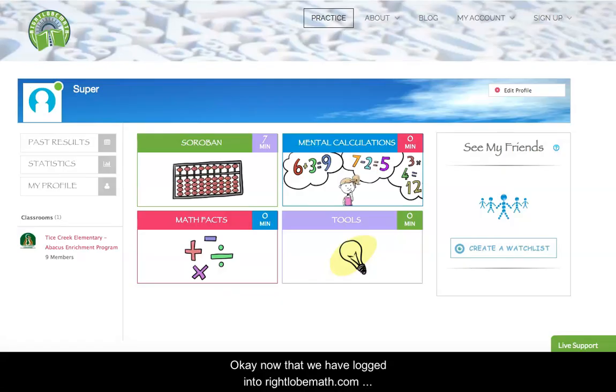Okay, now that we have logged in to rightlobemath.com, we're here on our main practice page. Here on the main practice page is where students will launch all their activities. At the center of the screen we see there are four training modules: Soroban, mental calculation, math facts, and tools. Now the program was designed for students to work across all of these modules, and we'll talk a lot more about how that is actually done in subsequent webcasts. For this webcast, we're going to focus mainly on this Soroban module to get started.